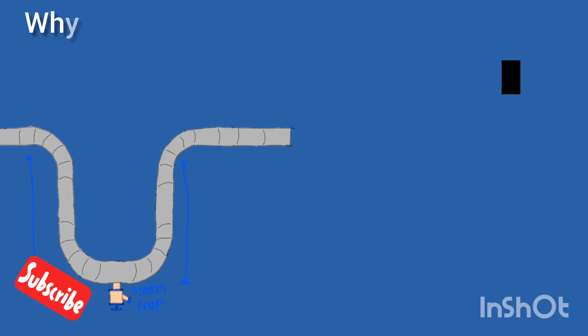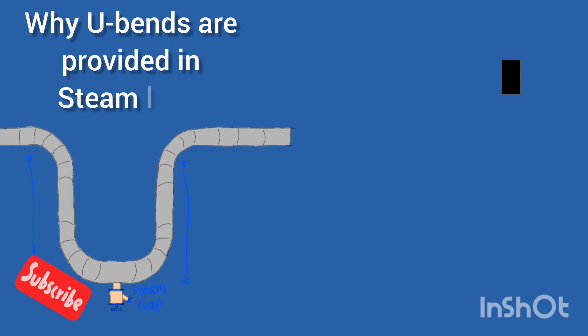Hi friends, in today's video we are going to discuss why U-bends or expansion bends are put in a steam line or a long route steam line. What happens when plant location and boiler location are far away from each other?